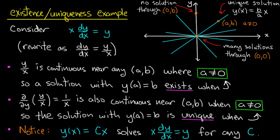On the other hand, if I go down to the origin, the point (0, 0), then lots and lots of solutions — in fact all of the solutions to the equation — pass through that point. So if I wanted to satisfy y(0) equals 0, I could do it in infinitely many different ways. So existence fails for points on the y-axis with b not equal to 0, and uniqueness fails at the origin.